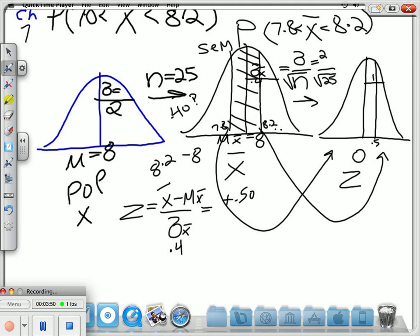Likewise, when you plug in 7.8 into this formula and do the calculation, 7.8 minus 8 divided by 0.4 is minus 0.5, which is in this direction, half a unit across, so it will be roughly around here.